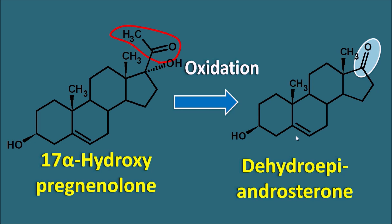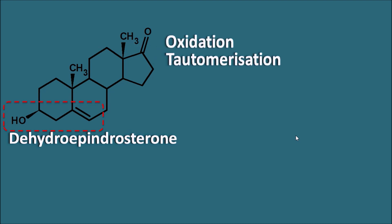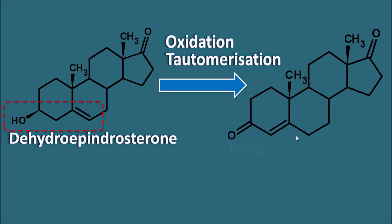We have removed the side chain at the 17th position. Now we have to introduce the aromatic nature to the first ring. In dehydroepiandrosterone, a hydroxyl group is at the 3rd position and a double bond is at the 5th and 6th positions. This can undergo oxidation followed by tautomerization: by oxidation the OH group becomes a ketone, and by tautomerization the double bond shifts to the 4th and 5th positions. This converts DHEA into androstenedione, which has a ketone group at the 3rd position and a double bond at the 4th and 5th positions.